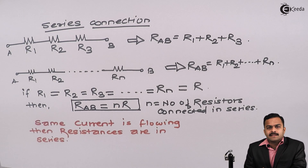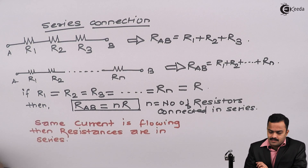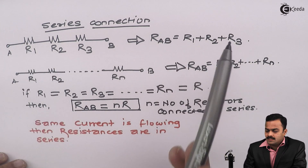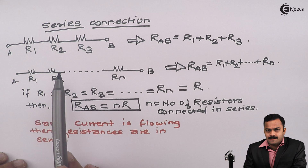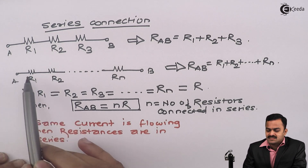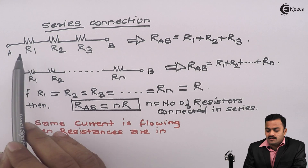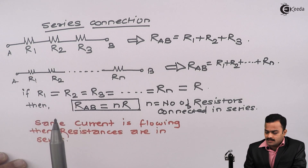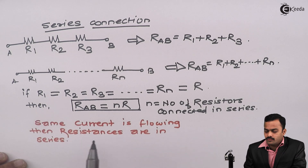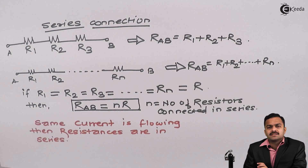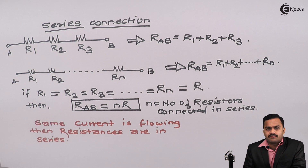So here we have seen, as far as structure is concerned, if resistors are connected one after the other, then the resistors are in series. At the same time, if these resistors are connected to a battery, the battery will give out a current which will remain the same for all of them. So the concept is: if same current is flowing, then all the resistances connected between the points are in series. Thank you.